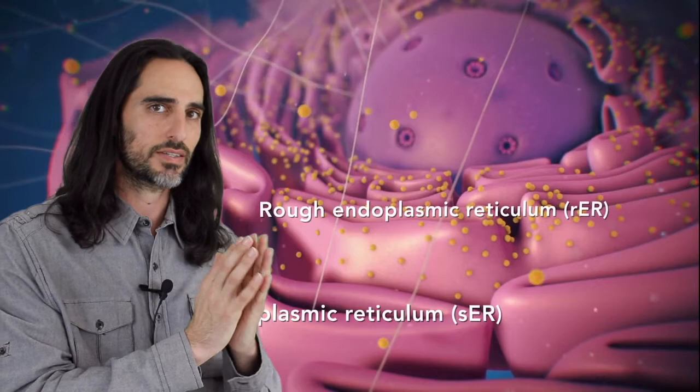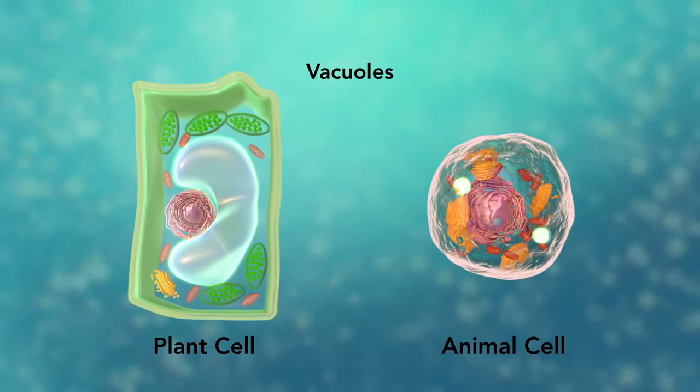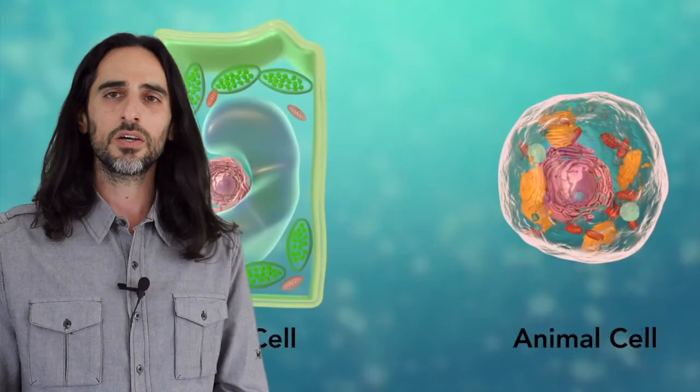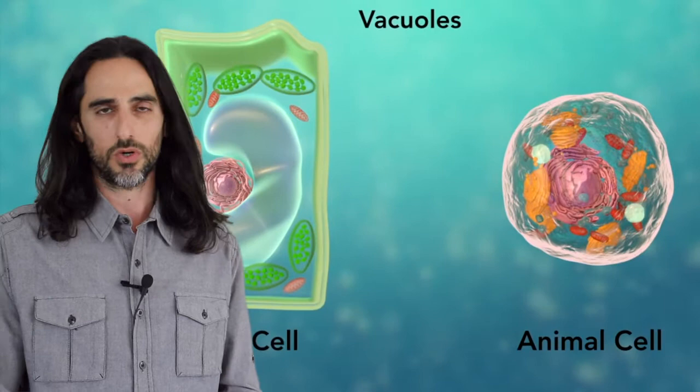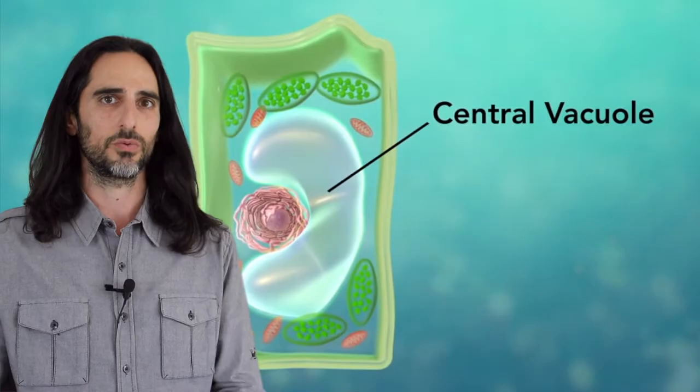Vacuoles are sac-like structures that store different materials. Here, in this plant cell, the central vacuole stores water. Could it be that this cell stores water just like my house stores people? We use the word store because we don't know the function, so we say, well, this is where the cell stores water, but maybe this is the dwelling place, this is where water dwells.